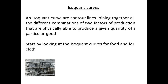Before we move on, let us remind ourselves of something that we have met earlier in our study of microeconomics. Isoquant curves are contour lines joining together all the different combinations of two factors of production that are physically able to produce a given quantity of a particular good. We shall now look at the isoquant curves for our two goods, food and cloth.